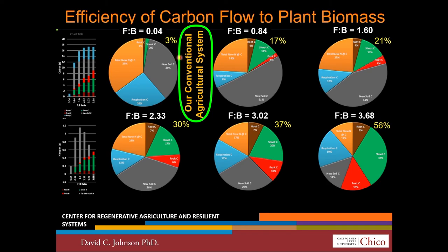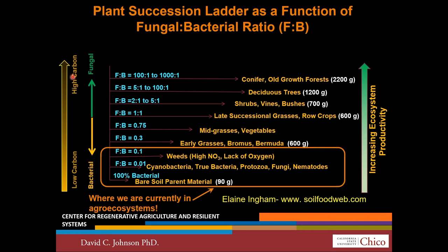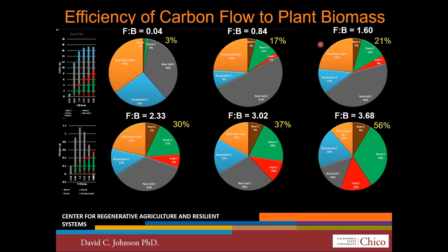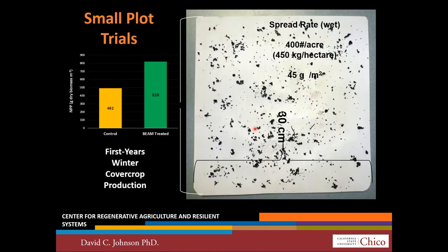Inoculation rates for these trials started at 400 pounds per acre — as you can see on this white square, it's just a dusting of compost. So the compost was used as a microbiological inoculant, not a nutrient resource. This trial explored the potential of plant growth on desert soils — ones that have no legacy issues from previous agricultural practices. Cover crops were grown on this soil, harvested and hauled off, and another crop was planted. This was to explore the capacity of an inoculated soil microbial community's potential to promote plant growth.